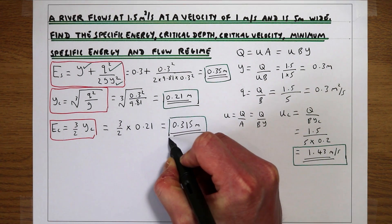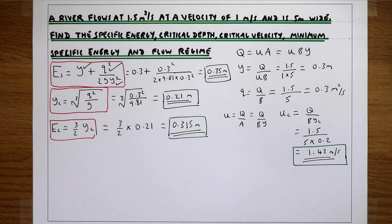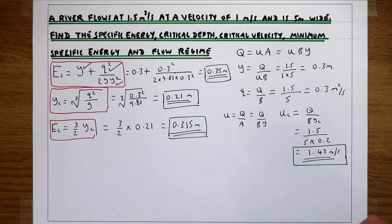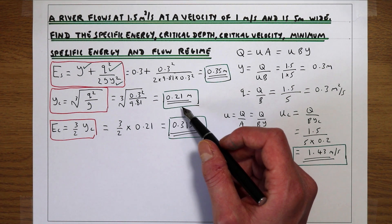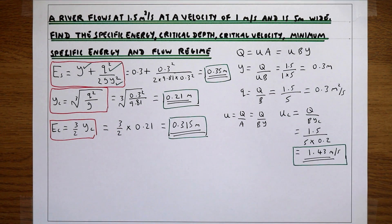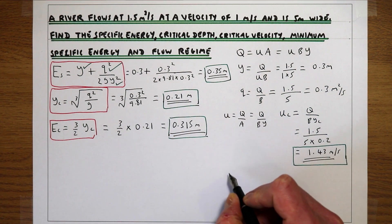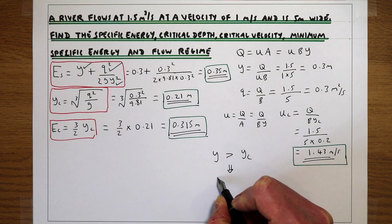The final question asks for the flow regime — is the flow subcritical or supercritical? Supercritical flow is fast with low depth; subcritical is slower with higher depth. If the flow depth is greater than the critical flow depth, the flow is subcritical. Our flow depth y = 0.3 m is larger than the critical depth yc = 0.21 m, so the flow is subcritical.